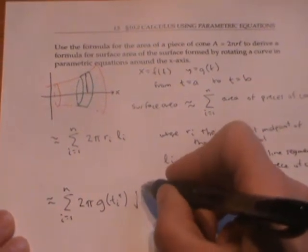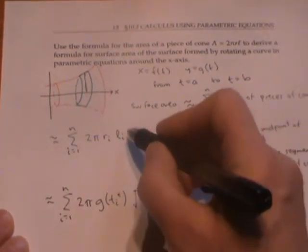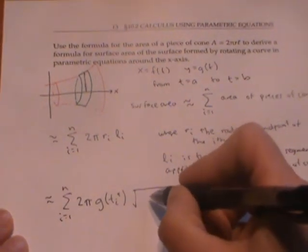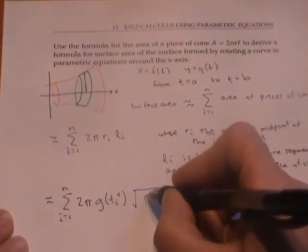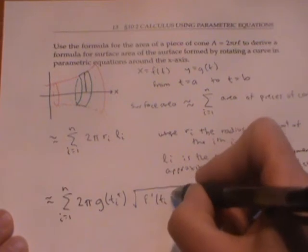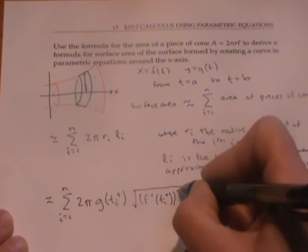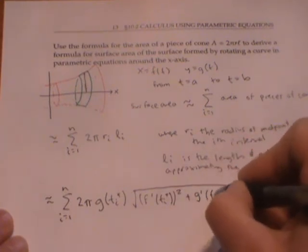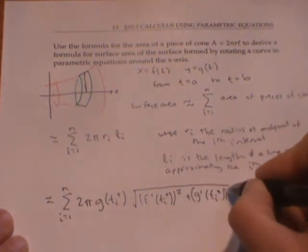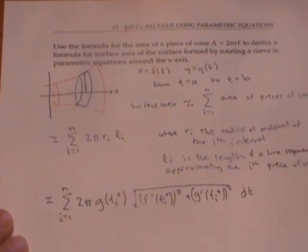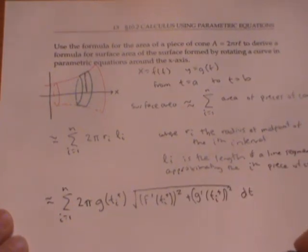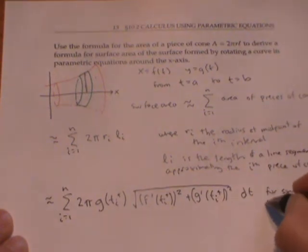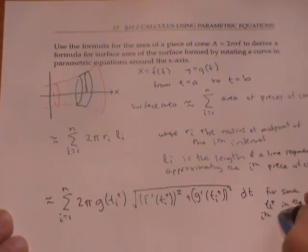And then my l_i, my length of my line segment, like when we derive the arc length formula, that straight line segment has a length given by the square root of f'(t_i*)² plus g'(t_i*)² Δt for some t_i* in the i-th time interval.